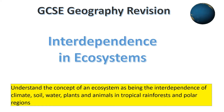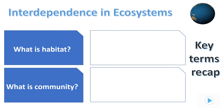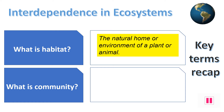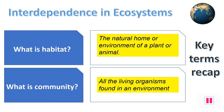Before we start to properly investigate interdependence, we need to have a quick recap on some keywords. They've been set out on the screen as one side of a revision card. The first key term is habitat — habitat means the natural home or environment of a plant or animal, such as a polar bear being found in the Arctic. The next key term is community — community means all the living organisms found in an environment. These communities are often displayed in food web diagrams.